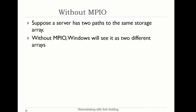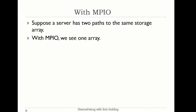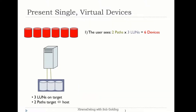Without MPIO, suppose a server has two paths going to the same storage device. Without MPIO, Windows will see these as two different arrays and both will be presented to the upper layers, as shown in the example. With MPIO, if you have two paths to the same storage, between MPIO and a DSM, one array will be presented to the upper layers.